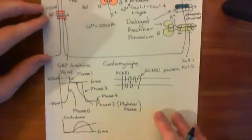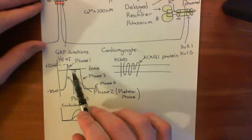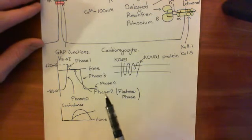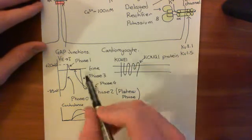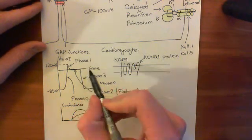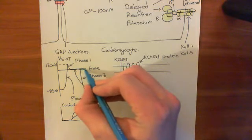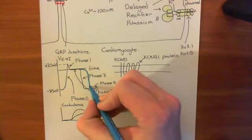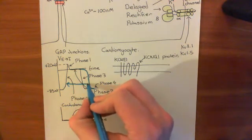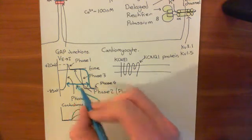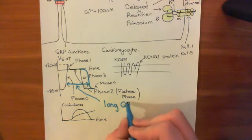So let's start off with what Long QT Syndrome is. We have seen the normal cardiac action potential here, which has this very familiar shape. Basically, if you have Long QT Syndrome, then your cardiac action potential is too long — namely, the plateau phase lasts for too long. It would go on for longer before you would get that repolarization. So Long QT Syndrome means you have a too-long cardiac action potential.